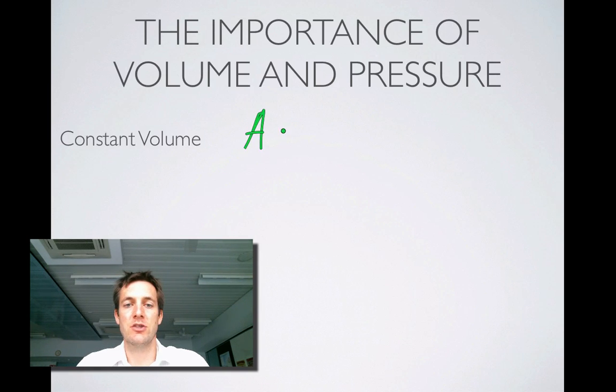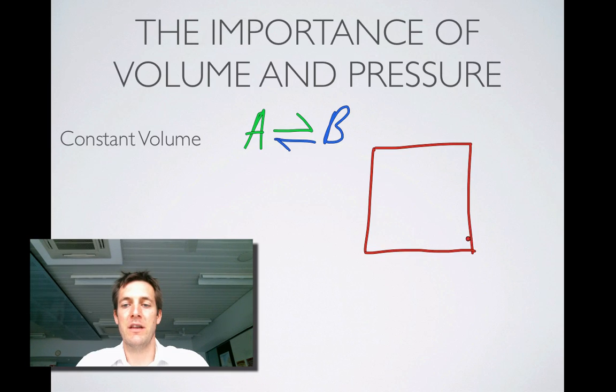Let's say my reaction system is A turning into B, an old favorite. And that this reaction is happening in some sealed container, sealed apart from the fact that I've got some kind of valve which allows me to inject noble gases, neon perhaps. Now, the thing about noble gases is they're not going to react with the things inside the box.